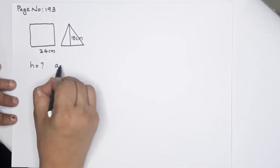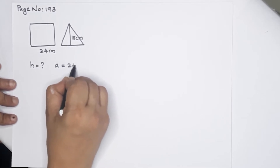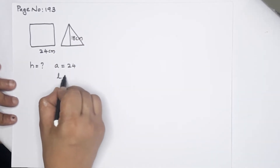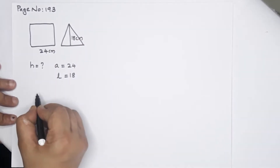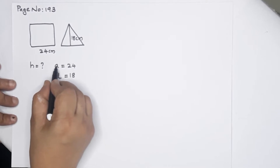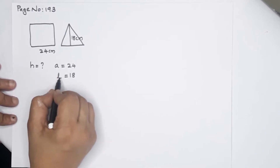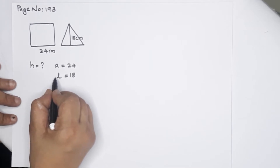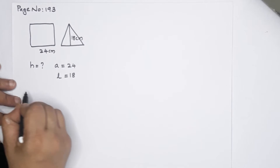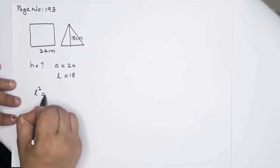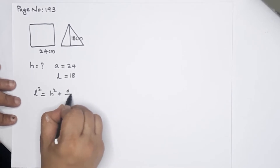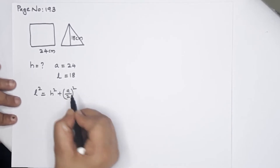We have A equal to 24, and L equal to 18. We need to look at the relationship between L, A, and H. The relationship is: L² = H² + (A/2)². This is the relation we need.